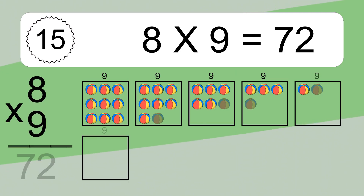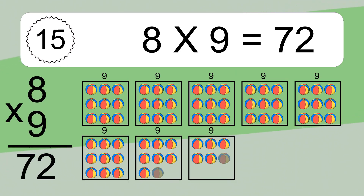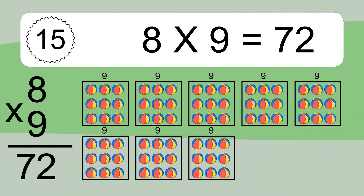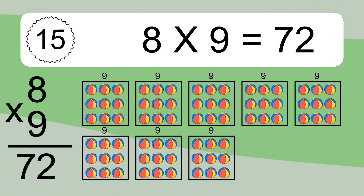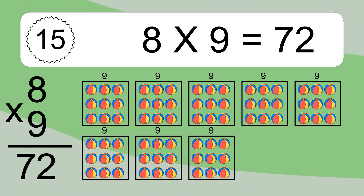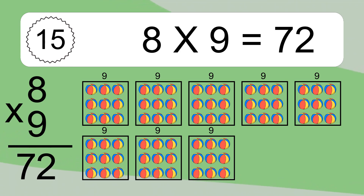8 times 9 equals what? 8 times 9 equals 72. We have 8 boxes, and each box has 9 colorful balls inside. If you count all the balls in all the boxes together, you will have 8 times 9 balls. This equals 72 balls.